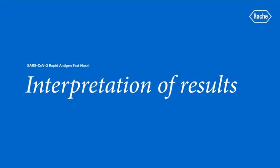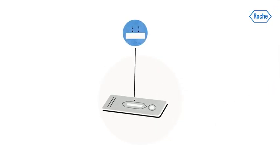Interpreting the results. A colored line appears in the top section of the result window to show that the test is working properly. This is the control line C. Even if the control line is faint or not uniform, the test should be considered valid.